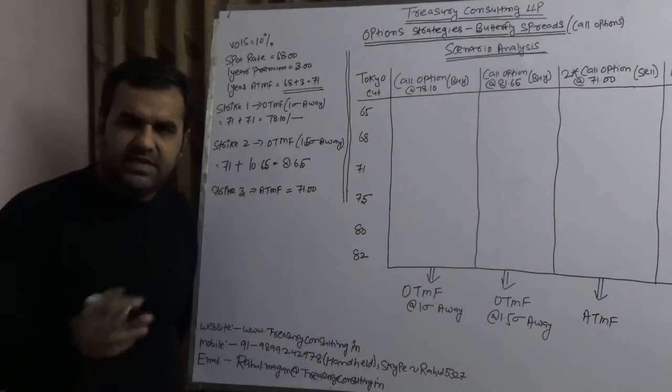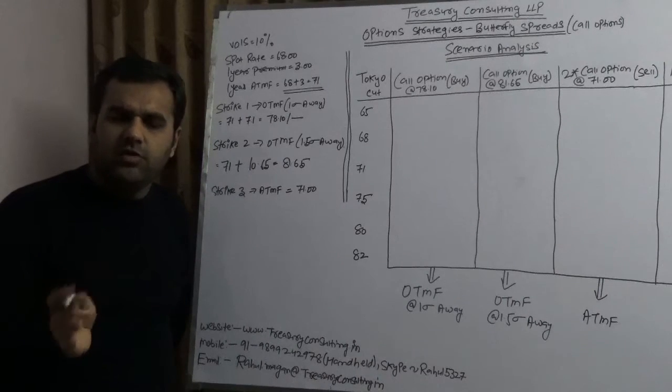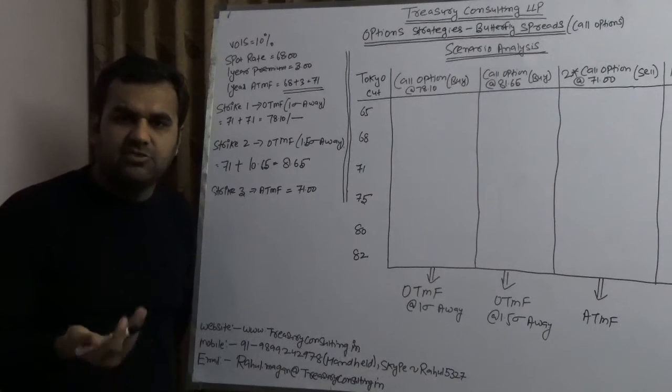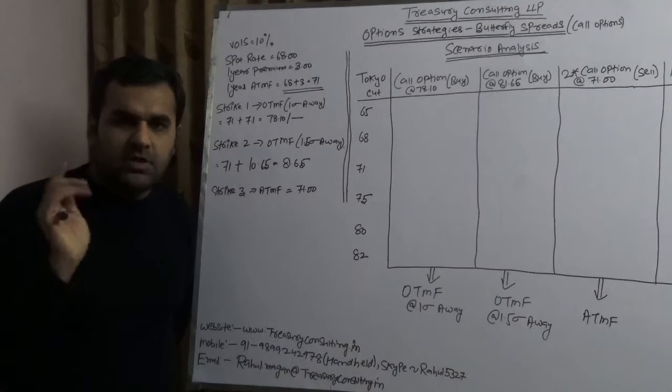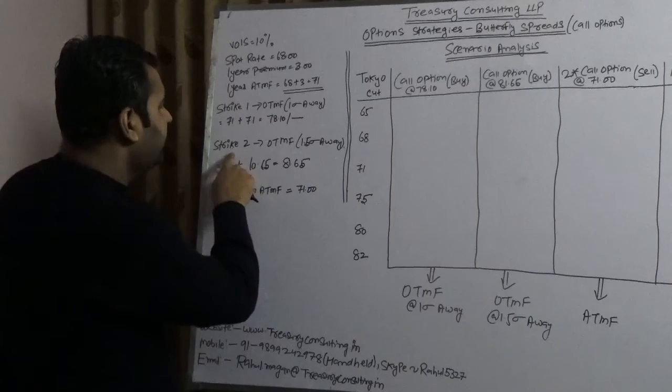There is a reason behind that, and the reason is very simple. If you take the strike out of the money, then you would be making money because you would be paying less premium, and in our language, diplomatically speaking, you would be paying almost zero premium. Please note you will never pay zero premium, but you would be paying almost zero premium.